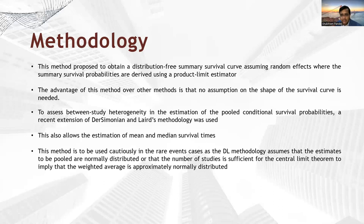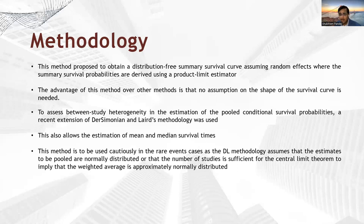There is one limitation of this method: it should be used cautiously in cases of rare events or when there are few studies, as the DL method assumes that the estimates to be pooled are normally distributed, or that the number of studies is sufficient for the central limit theorem to imply that the weighted average is approximately normally distributed. Since this paper uses a recent extension of the DL method, this assumption holds true here as well. In cases of rare events or few studies, the results should be interpreted with caution.